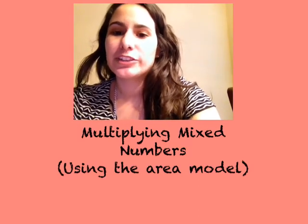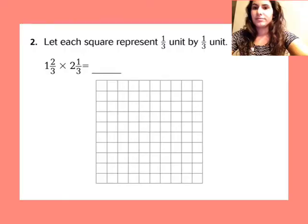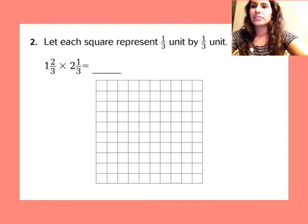This is multiplying mixed numbers using the area model. We're going to do number two together. This is number two on your homework.